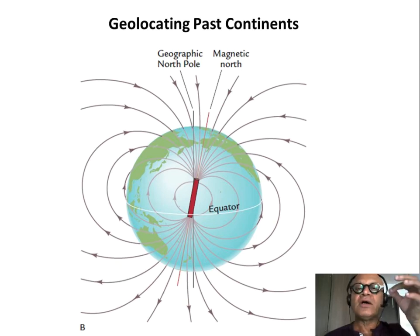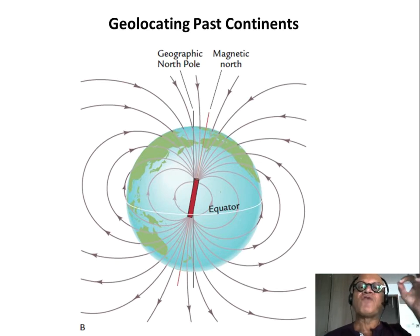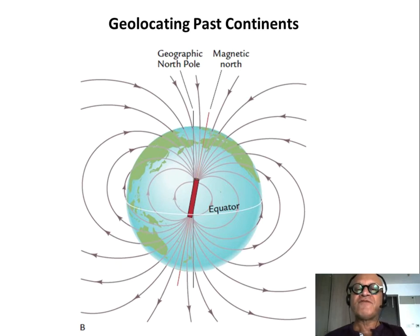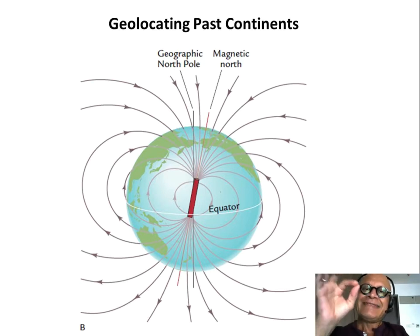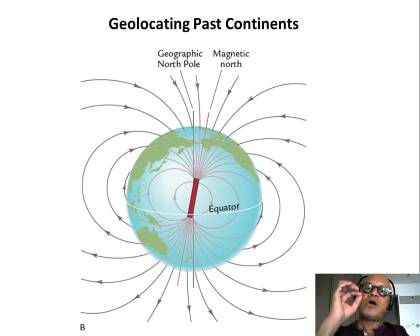To geolocate, you can look at the magnetic properties locked into that piece of rock on that continent. You go to Australia or India, find old rocks, and try to see where they were in the past. Magnetic lines have a high angle at higher latitudes towards the poles and flatter angles at lower latitudes. So if you find the magnetic property of a piece of rock, date it, and then you can use the magnetic lines to determine what latitude it was at that time.